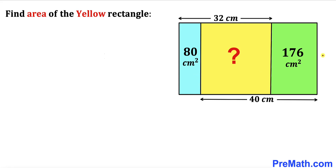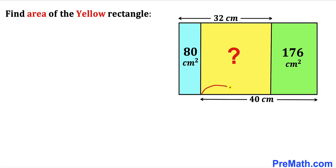In this video we have got a big rectangle that consists of three smaller rectangles. As you can see in this diagram, the area of the blue rectangle is 80 centimeter square, whereas the area of the green rectangle is 176 centimeter square. Moreover, this combined length of this side is 32 centimeter, and likewise this combined length for the yellow and green rectangle is 40 centimeter. We are going to calculate the area of the yellow rectangle.